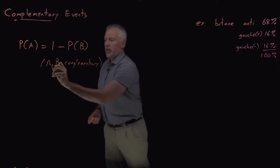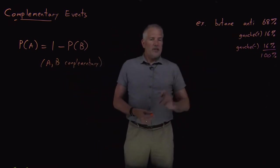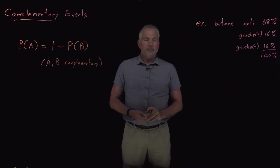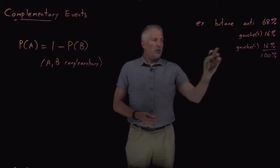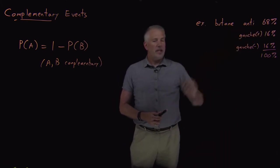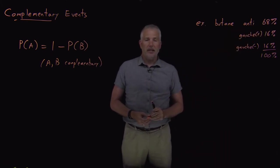So, to make sure we understand how that works, we can think of this example of the butane molecule. If I have a butane molecule that at room temperature in the gas phase is either anti-gauche plus or gauche minus, with probabilities of 68% in the anti-confirmation and 16% in either of the two gauche confirmations.